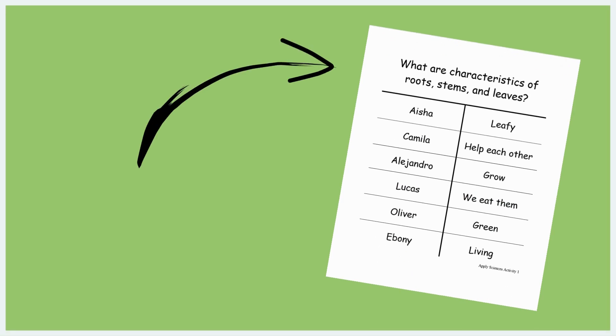Before starting this activity, you will need to write the activity question — What are characteristics of roots, stems, and leaves — at the top of your documentation panel.